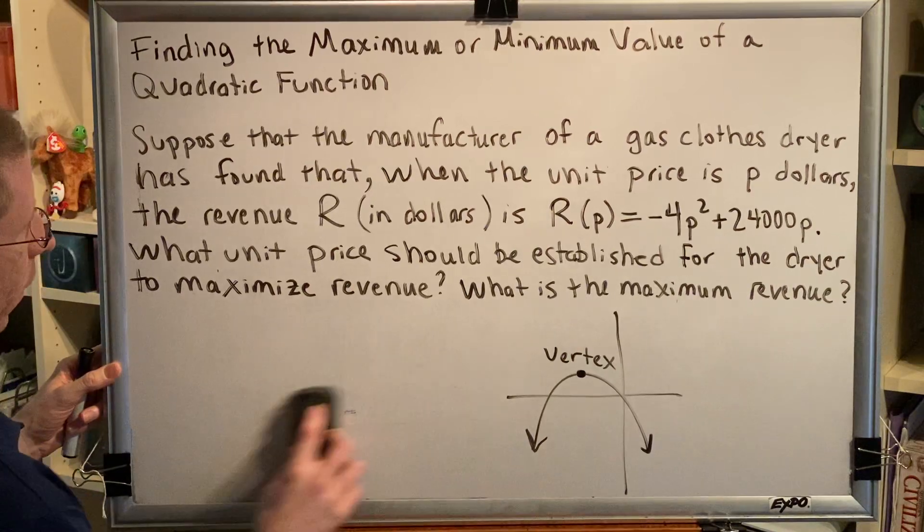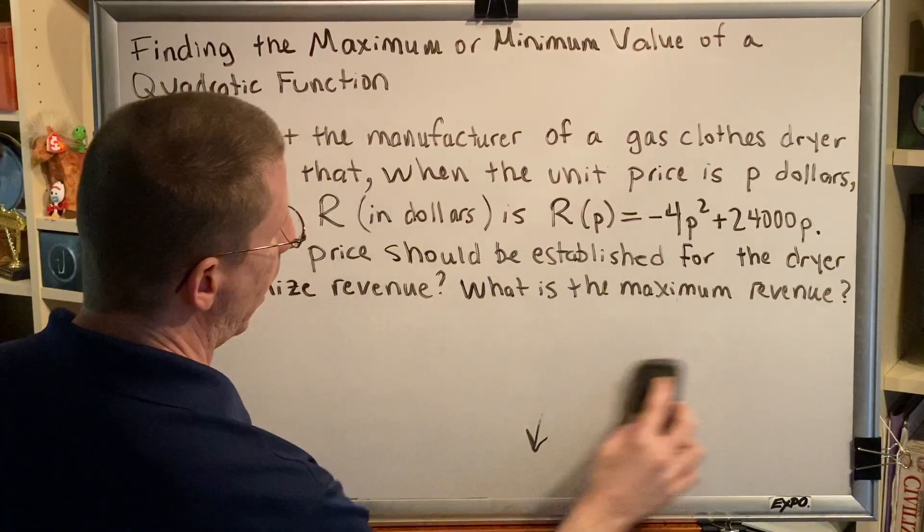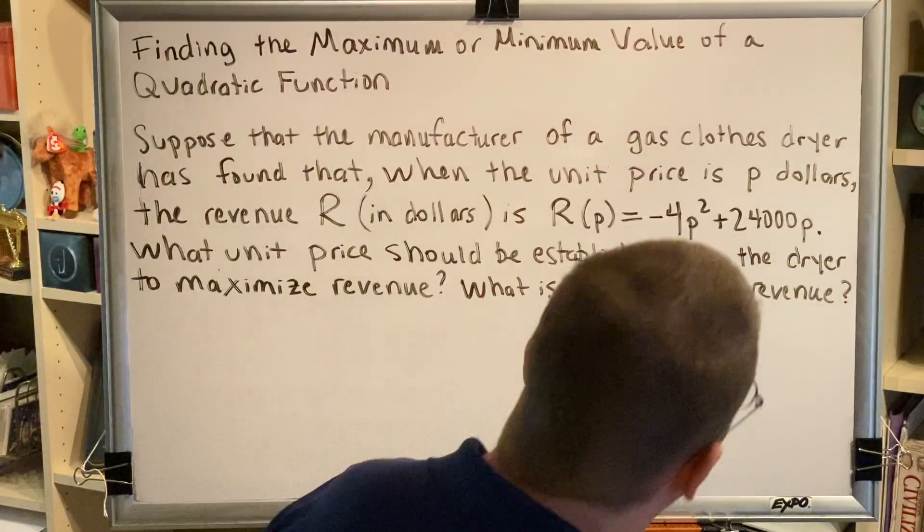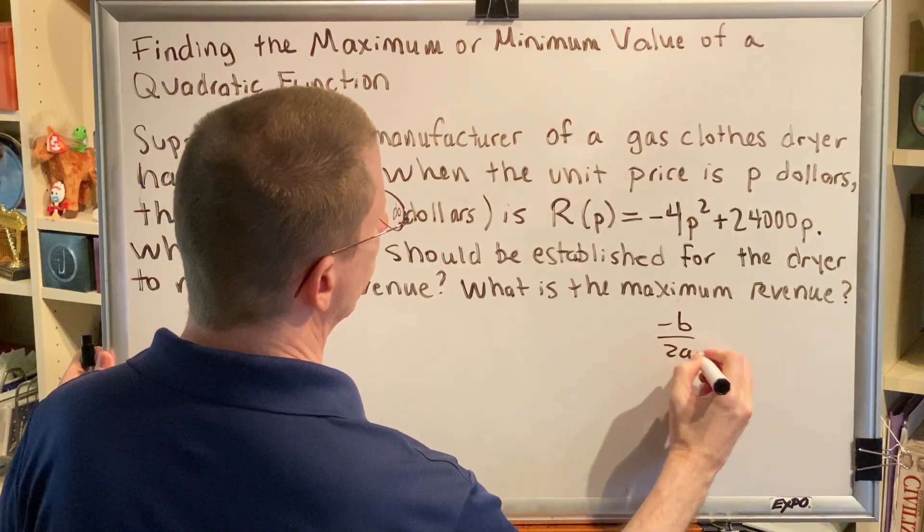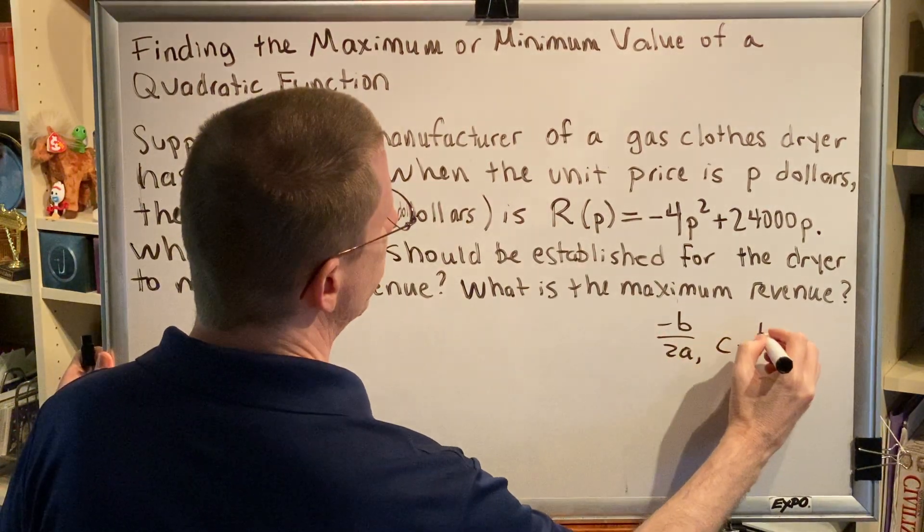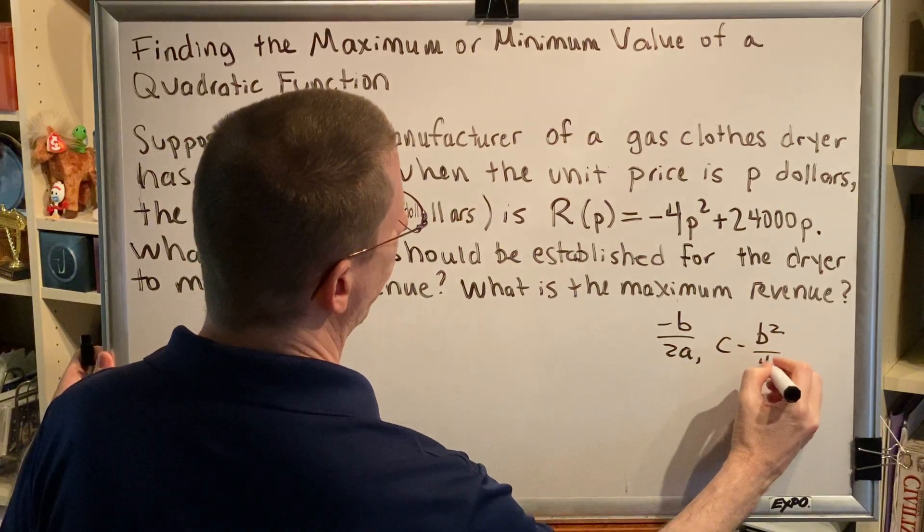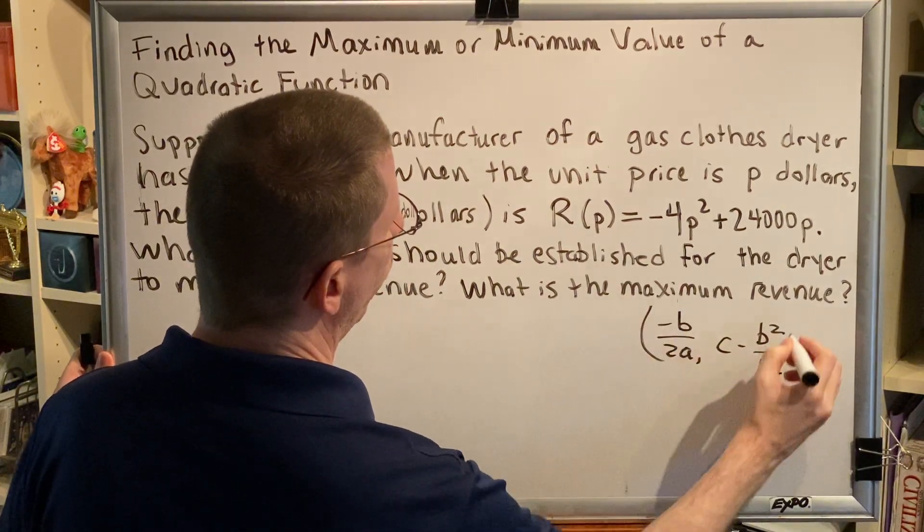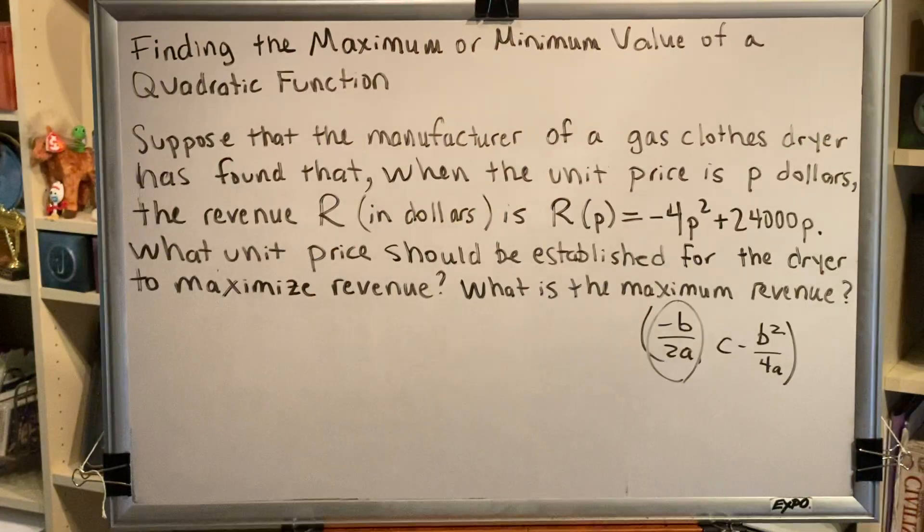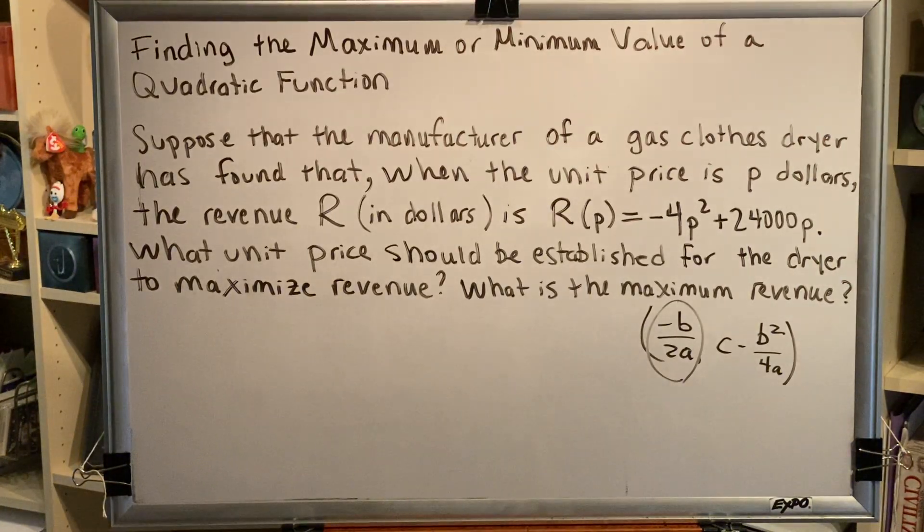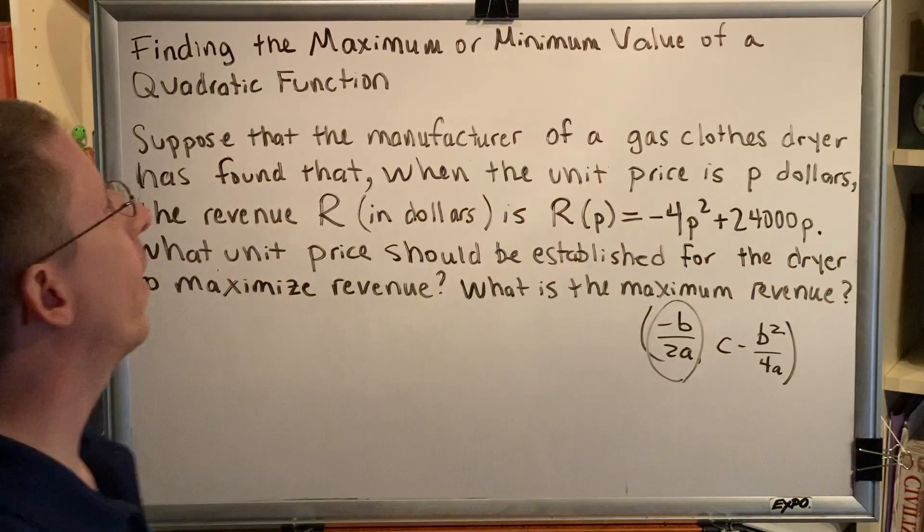And there's a formula for vertex. The formula is opposite b over 2a for the x coordinate, and c minus b squared over 4a for the y coordinate. Or if you prefer, you can simply use this to find the value of your variable and then plug into your equation to find the value of the other.